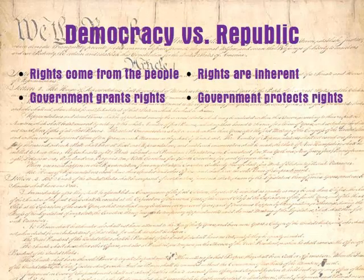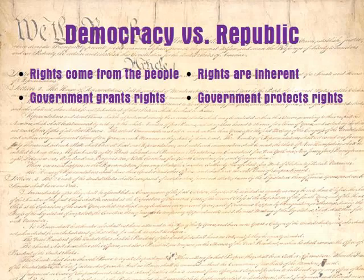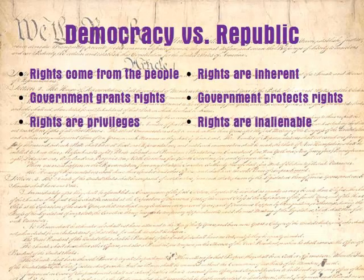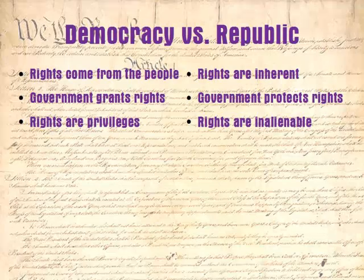In a democracy, since rights come from the people, it falls to the government to say what rights people do and do not have. The duly elected representatives of the people can act with their authority and essentially claim whatever they want. But under the Constitution, rights are protected. Since they are considered to be an inherent part of your existence, no authority whatsoever can claim legitimacy in any act infringing on your rights. In a democracy, rights are privileges, and your rights are limited to whatever your fellow countrymen agree should be your rights — they can be taken away at any time. But in our republic, rights are inalienable. They cannot be separated from you, and so they cannot be taken away, only violated. As such, it is the government that is limited, not your rights.